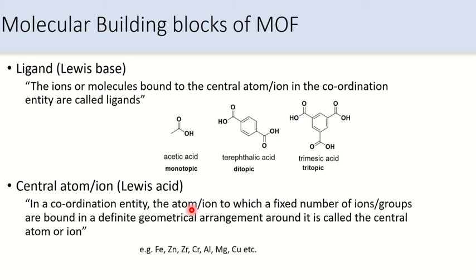To brush up on Lewis acid-base chemistry: Lewis defined a base as an electron pair donor and an acid as an electron pair acceptor. The reaction between a Lewis acid and Lewis base is called a donor-acceptor reaction. It involves the formation of a covalent bond and, more often than not, a complex compound. Nowadays, quantum mechanical equations are used to explain this covalent bond formation, but for simplicity we keep it to Lewis acid-base chemistry.